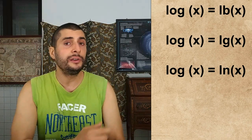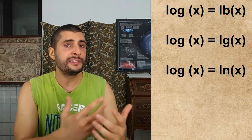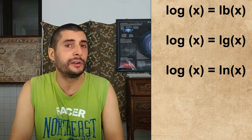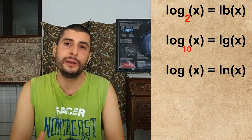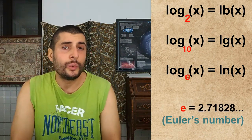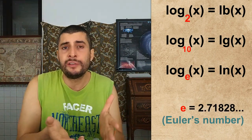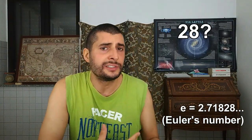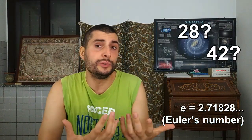The logarithm has many bases. The most commonly used are two, ten, and e. Why e? Why 2.71828? Why not twenty-eight? Or forty-two?